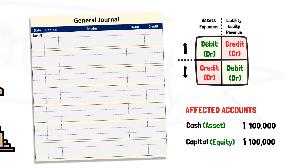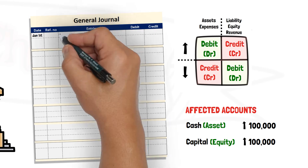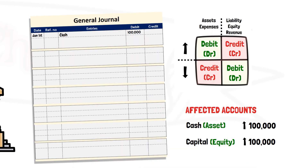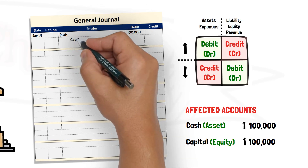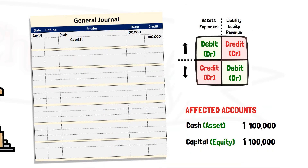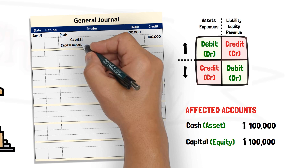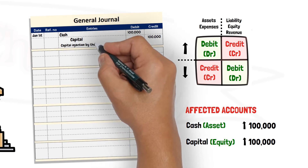Using the debit and credit rule, the increase in the cash account is recorded by debiting cash by 100,000, and the increase in the capital account is recorded by crediting the capital account by 100,000. A brief description is written about the transaction.